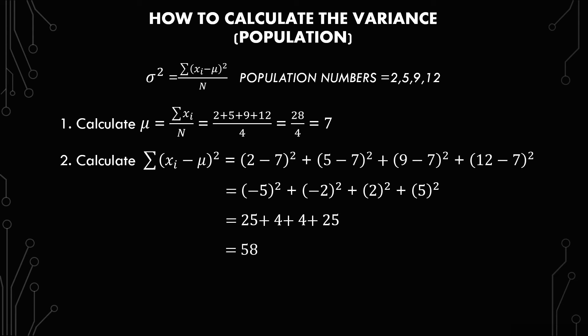The next thing we have to do is just plug it back into the formula. So we have sigma squared equals 58 over n, which is 58 over 4, which is 14.5. That's not rounding, that's just what the answer is.